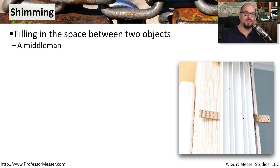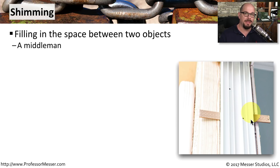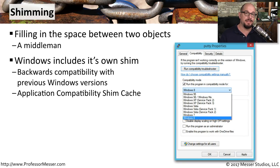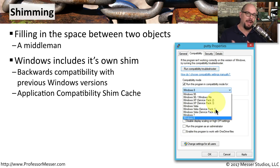Our operating systems also include shims. We often think of shims as a physical thing that sits between two objects — maybe you're shimming up a door jam and making sure everything is perfectly straight — but it's a middleman. There are also software-based shims in our operating systems. For example, in Windows, there is a shim built into the operating system that allows you to modify applications to run as if they are on different versions of Windows. That way, you're able to take legacy pieces of software and run them on the latest versions of the operating system.